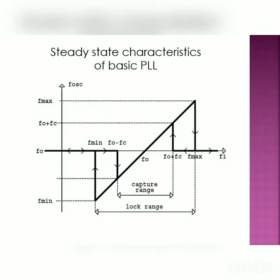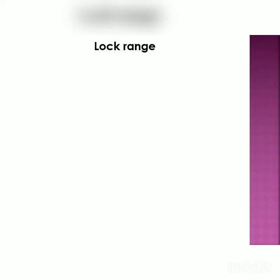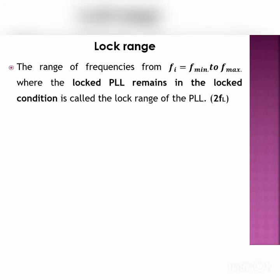The steady state characteristics of the basic PLL show the variation of oscillator frequency at the output of the VCO against the input signal frequency Fi. Two ranges of input signal frequencies are highly important: the capture range and the lock range. The lock range is the range of frequencies from F minimum to F maximum where the locked PLL remains in the locked condition, equal to twice FL.